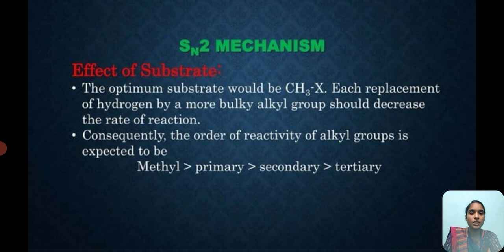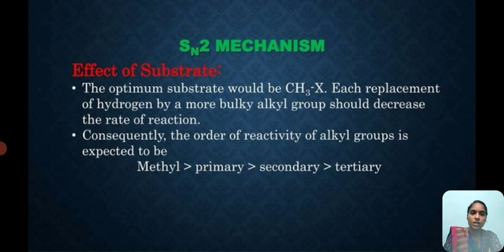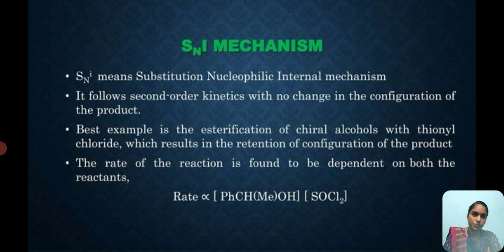Effect of substrate in SN2. The optimum substrate would be CH3X, that is, methyl halide. Each replacement of hydrogen by a more bulky alkyl group decreases the rate of the reaction. Consequently, the order of reactivity is: methyl greater than primary, greater than secondary, followed by tertiary.